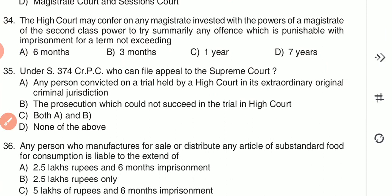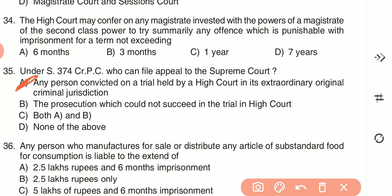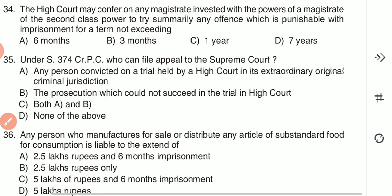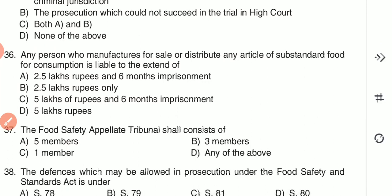Question 35: Under Section 374 CrPC, who can file appeal to the Supreme Court? (A) any person convicted on a trial held by a High Court in its extraordinary original criminal jurisdiction, (B) the prosecution which could not succeed in the trial in High Court, (C) both A and B, or (D) none of the above. The answer is A — any person convicted on a trial held by a High Court in its extraordinary original criminal jurisdiction.